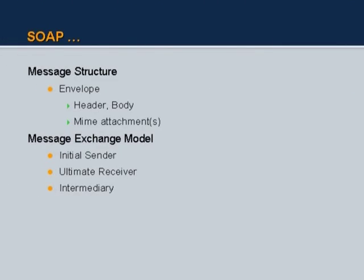SOAP has a message structure with an envelope containing a header and a body, plus MIME attachments — just like standard email attachments. The message exchange model includes an initial sender, ultimate receiver, and any intermediaries. You might utilize SOAP through multiple intermediaries; for example, a message going to an application in Chennai might pass through a bank's application in Delhi, allowing that intermediary to add value to it before forwarding.